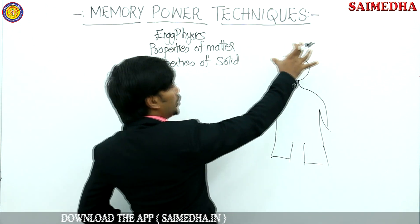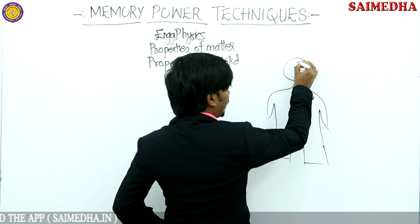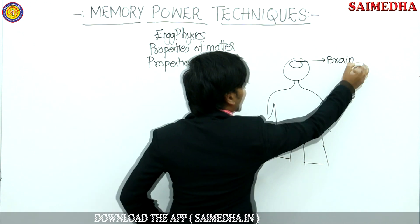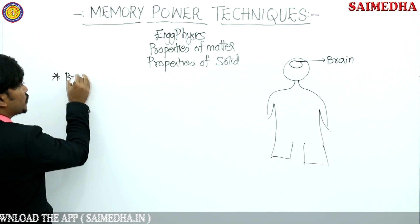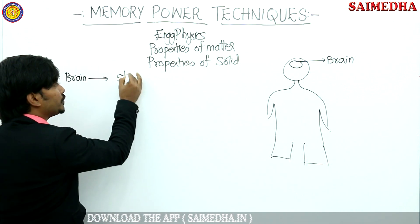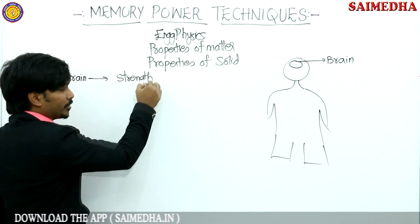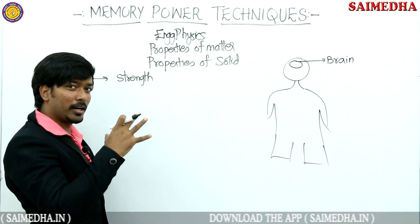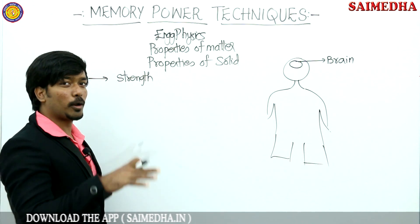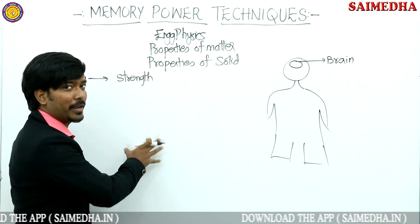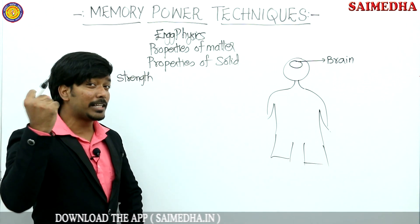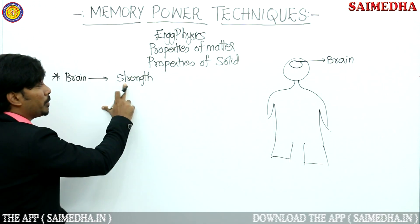At the topmost part of the human body, who is the master? Brain is the master. The first property of solid which we are going to remember is strength. Brain is the most strong, so the first property of solid is strength.